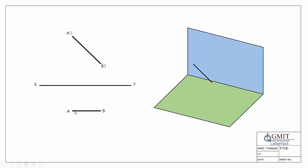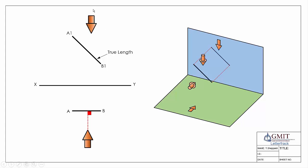In our next example, in plan view the line is horizontal but in elevation the line is angled. Looking straight in from the front, we are perpendicular to it; when projected onto the vertical plane (X1Y1) it is parallel to it, so in elevation we have a true length line. Looking from above, we are not looking perpendicular to it and the line isn't parallel with the XY line, so in plan view we have a foreshortened length.